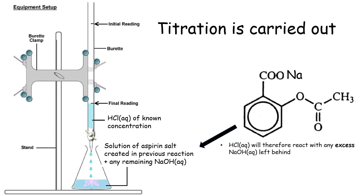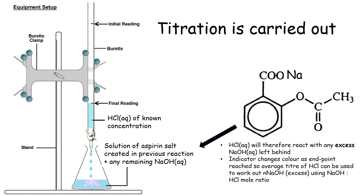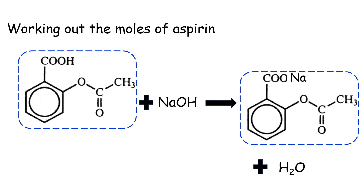The HCl will react with any excess sodium hydroxide left behind, and when the indicator changes colour the end point is reached. The average titre of HCl can then be used to work out the moles of excess sodium hydroxide, using the mole ratio between sodium hydroxide and HCl. The original number of moles of sodium hydroxide minus the excess moles must equal the moles of aspirin — we can assume this by looking at the equation.